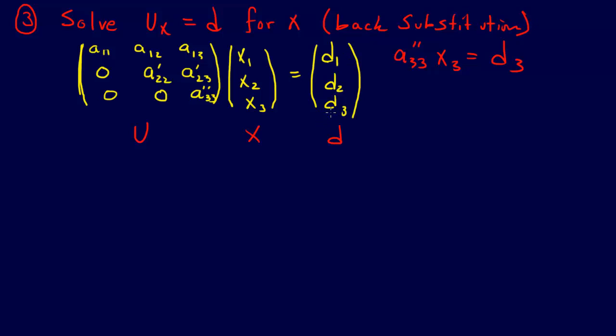It's back substitution because we're starting with our x3 and then going to our x2 and our x1, as opposed to forward substitution where first we find x1, then we find x2, then we find x3. So we do that, and then we get x3 equals d3 over a33 double prime.